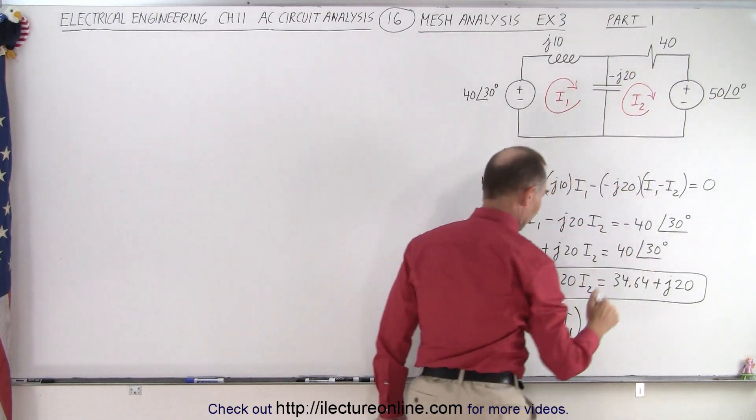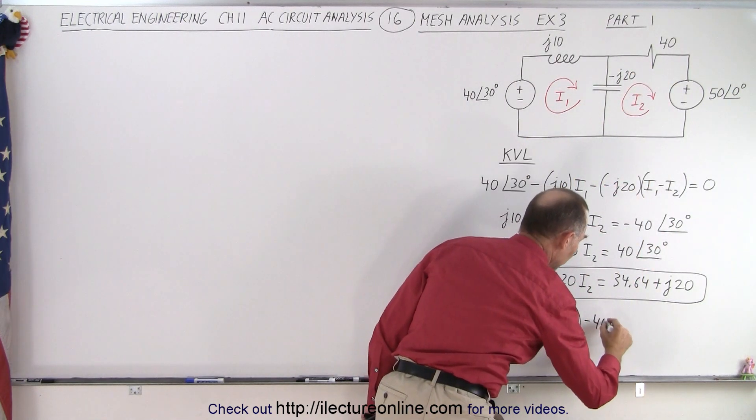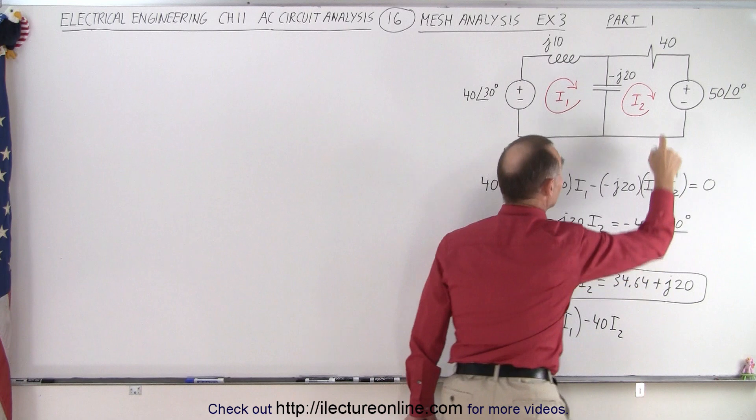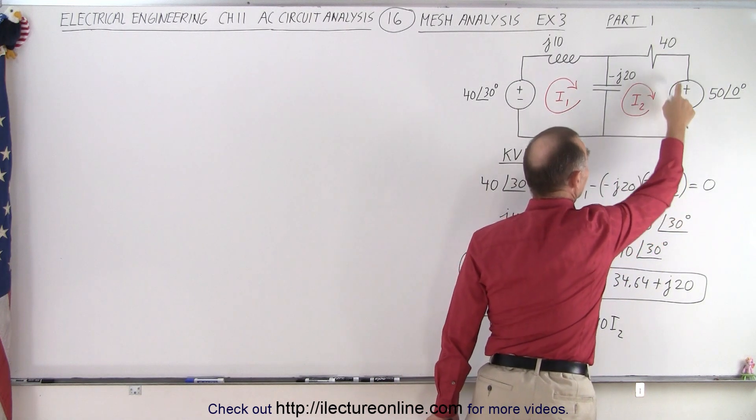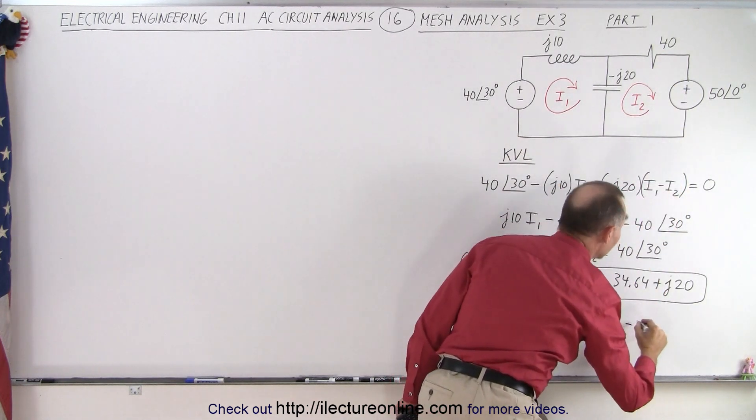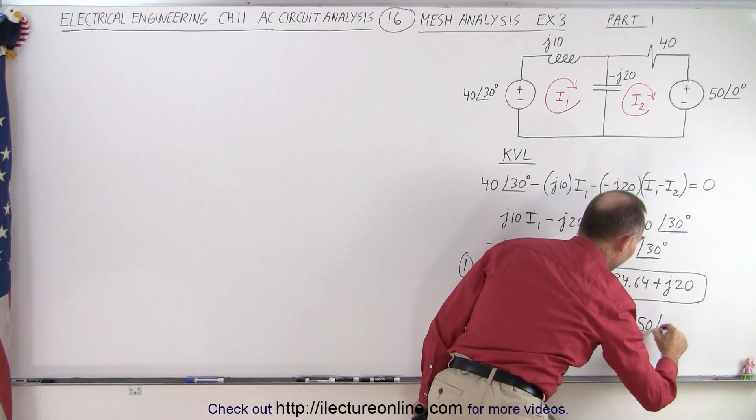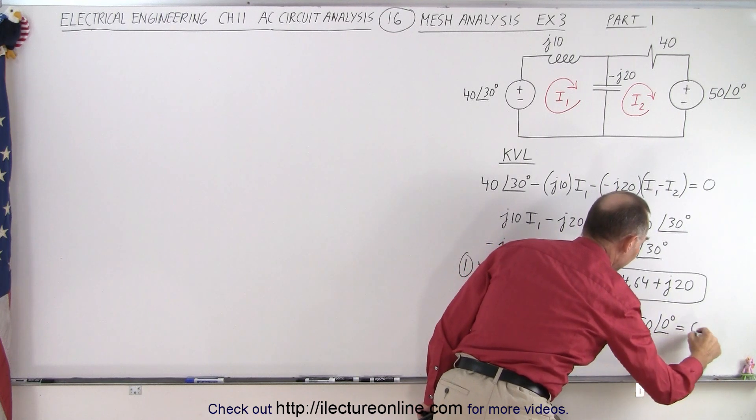Then I go across the resistor so it's a voltage drop minus 40 times I2. Then I go across the power supply from positive to negative so that's a minus 50 with a phase angle of 0 degrees. And that adds up to 0.